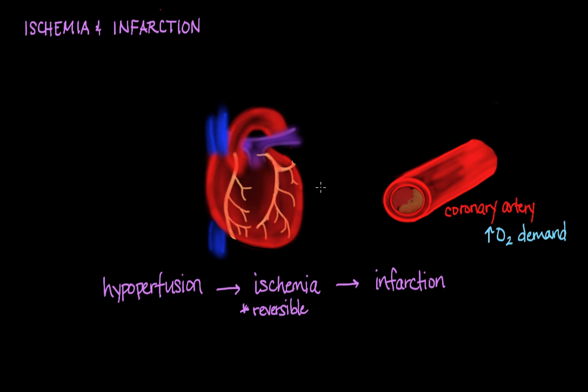Any tissue or organ in the body can experience ischemic changes and then become infarcted, not only by thrombus formation as I just described with this coronary artery example, but also with the lodging of an embolus, which is often the case for stroke patients. For example, when an atherosclerotic plaque breaks off of one of the carotid arteries in the neck and then propagates to a cerebral artery, cutting off blood supply to all the brain tissue downstream from the artery. This would be an example of ischemic stroke.